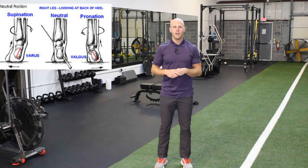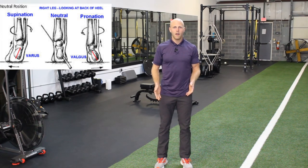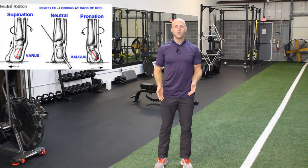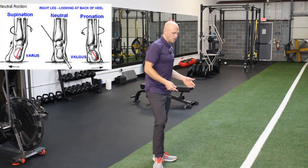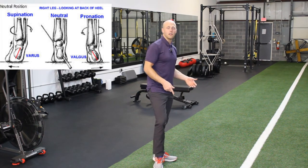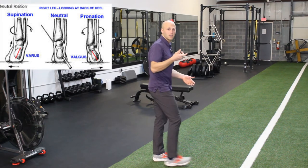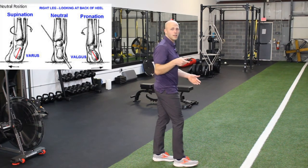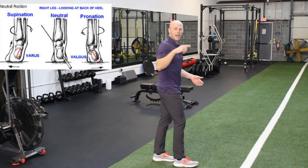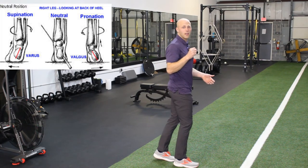If you're somebody who has bunions, this can be a contributing factor to that. Another thing you could see is medial-side Achilles tendinopathy, because that calcaneus is going too far into eversion, so the medial side — the inside — of that Achilles is being overstretched.